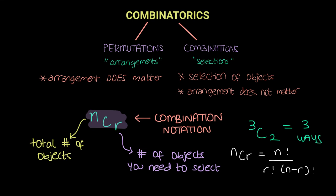So to conclude, the main difference between permutation and combination is that combinations is simply about selections of objects and arrangement does not matter, whereas permutations is the arrangement of objects and the arrangement does matter. Thank you.